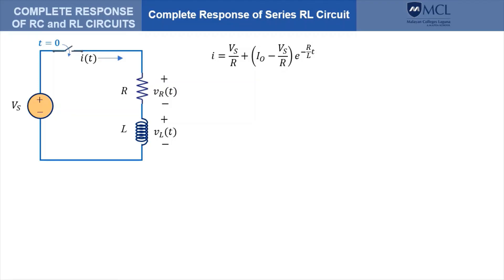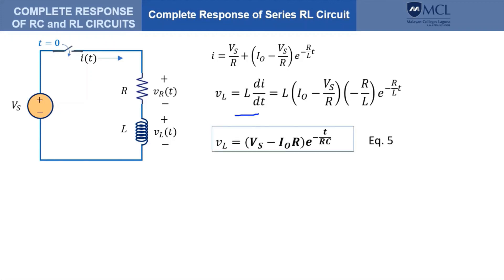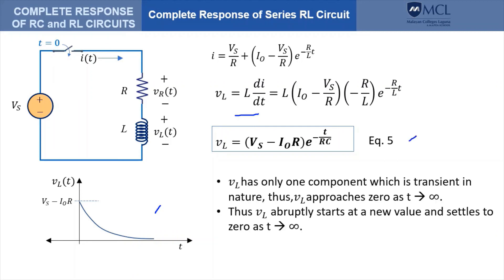We can also solve for V sub L, the voltage across the inductor, from the inductor's voltage-current relationship. That gives us this equation. Plotting that voltage, we see that this voltage has only one component — a transient component. This voltage abruptly changes from zero before the switch is closed, jumps to a peak value, and then starts to decay and goes to zero as time increases.